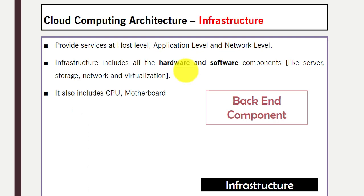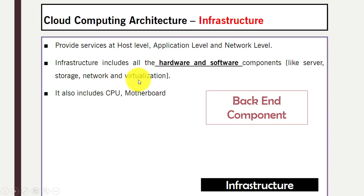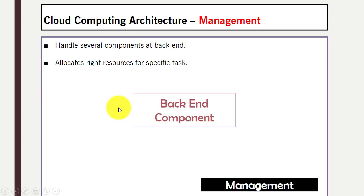Infrastructure provides services at the host level, application level, and network level. It includes all the hardware and software components required, like server, storage, network, and virtualization, and it also includes the CPU and motherboard. Management means how they will handle the several components at the back end of the cloud — it allocates the right resources for specific tasks according to the user's requirement.